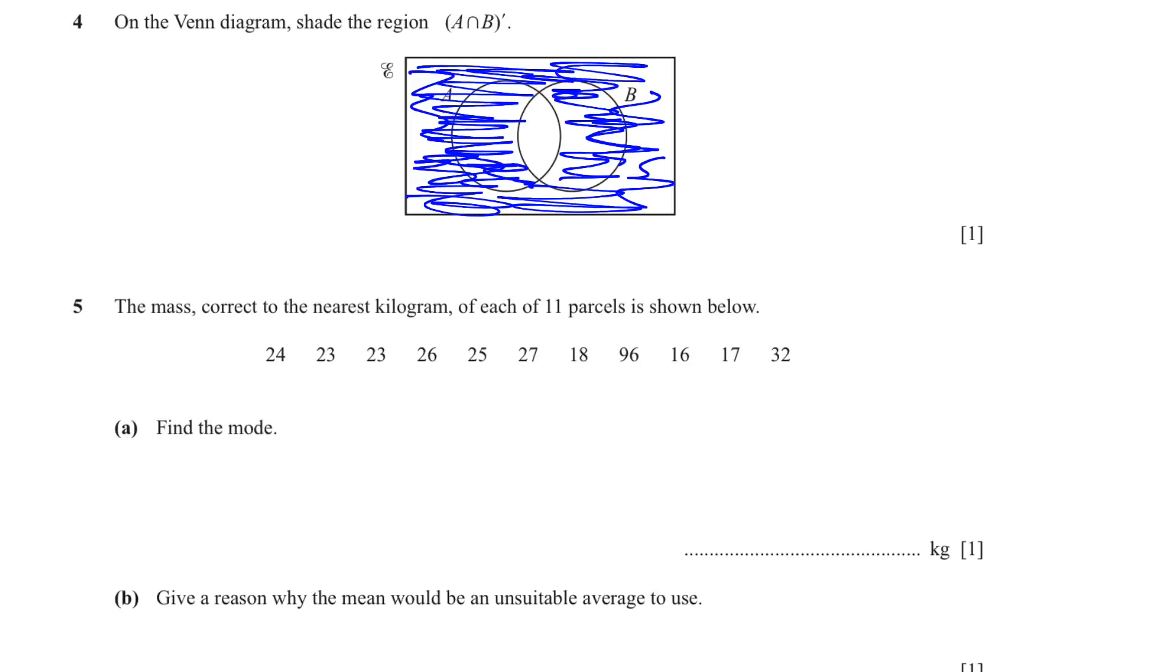Question number five. The mass correct to the nearest kilogram of each of 11 parcels is shown below and we have to find the mode. Mode is the most repeated number. So which is the most repeated number here? We can see that it is 23. You have two 23s and everything else is 1.